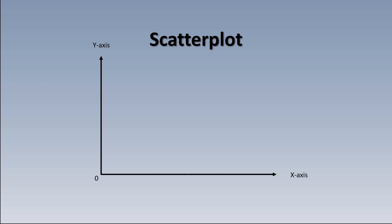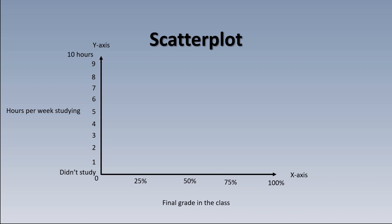Let's say I want to see if there's a correlation between the time students spend studying in my class versus their final grade. I'll make the y-axis represent the number of hours students spend studying per week — from zero up to ten. The other variable is their final grade, going from zero up to 100%. With a class of 30 students, each dot represents one student. Its position shows how many hours they studied on average and what their final grade was. The first studied five hours and got 80%, the second studied seven hours and got 90%, and I just keep going.